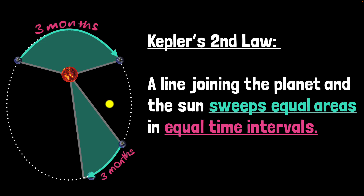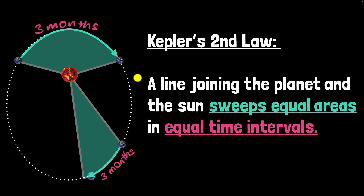Kepler's second law says that a line joining the planet and the Sun sweeps equal areas in equal time intervals. It doesn't matter what time interval you take — as long as the intervals are equal, the area swept will always be the same regardless of where in the orbit you measure. The main reason this works is that the force is directed toward the Sun. In fact, this is how Newton used Kepler's second law to realize the force on all planets must be toward the Sun, helping him establish his law of universal gravitation.